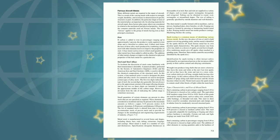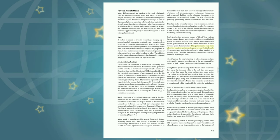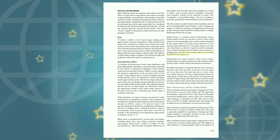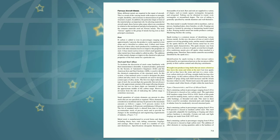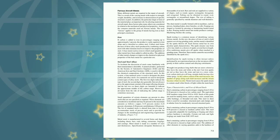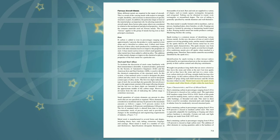Spark testing is a common means of identifying various ferrous metals. The piece of iron or steel is held against a revolving grinding stone and the metal is identified by the sparks thrown off. Each ferrous metal has its own peculiar spark characteristics; spark streams vary from a few tiny shafts to a shower of sparks several feet in length. Few non-ferrous metals give off sparks when touched to a grinding stone, so they cannot be identified by the spark test. Wrought iron produces long shafts that are straw-colored as they leave the stone and white at the end. Cast iron sparks are red as they leave the stone and turn straw-colored. Low carbon steels give off long, straight shafts having a few white sprigs; as carbon content increases, the number of sprigs increases and the stream becomes whiter. Nickel steel causes the spark stream to contain small white blocks of light within the main burst.